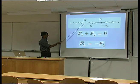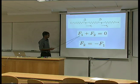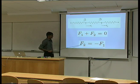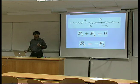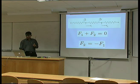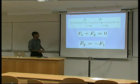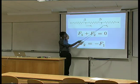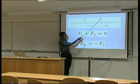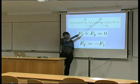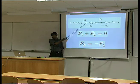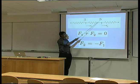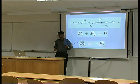So when this spring is at equilibrium, the sum of forces equals zero, and it follows that F2 will be equal to minus F1. When I have this force F2 acting on this, it causes a displacement delta 2. Notice that this force F1 is also causing a displacement delta 1. So the net displacement will be delta 2 minus delta 1.